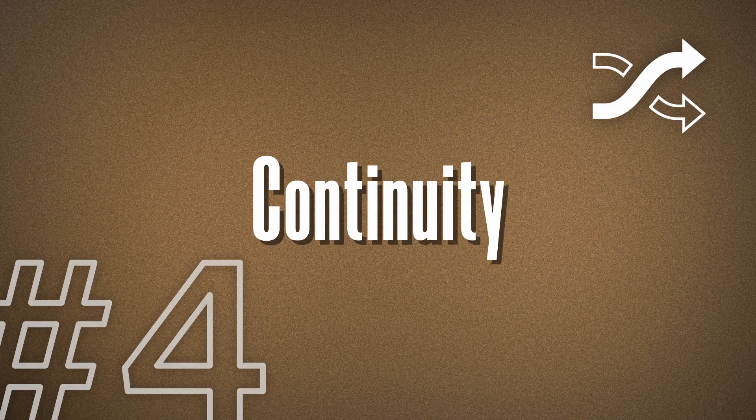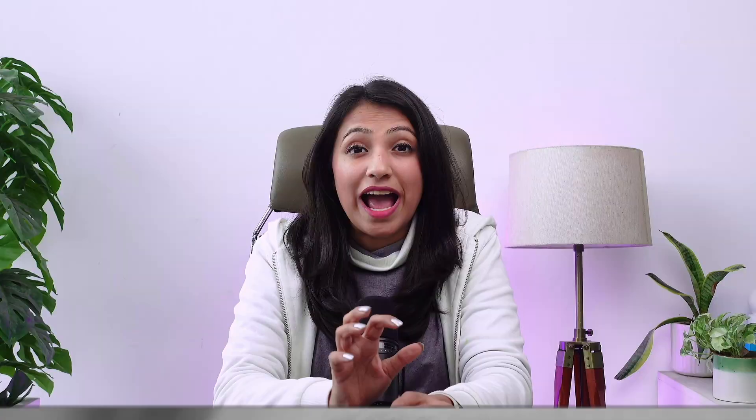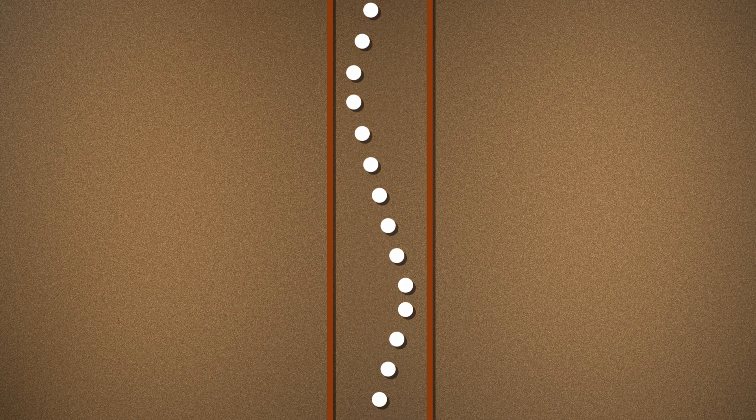Next, we're going to talk about continuity. Our eyes tend to look at the smoothest flow and continue to follow a pattern as long as it lasts. Looking at a classic example of continuity, you can see how our eyes tend to ignore color and continue to follow the form. This can be really used to draw your user's attention in a certain direction.